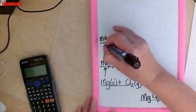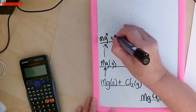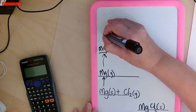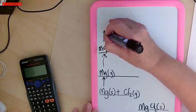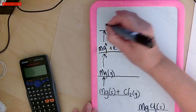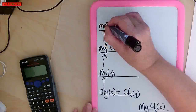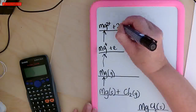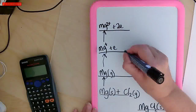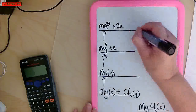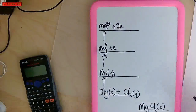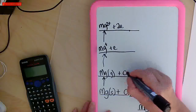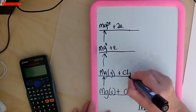Then I'm going to take an electron off the magnesium — that's the first ionization energy. I take one electron off. I'm then going to take the second electron off — that's the second ionization energy — and there's the second electron.